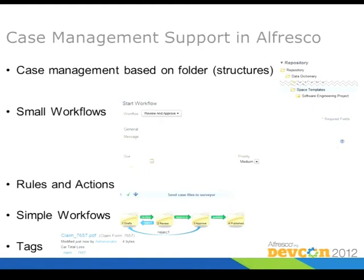We have simple workflows — we can set up folders, link them, assign simple workflow steps, and just push a button. A document goes into review, then approve, rejected goes back, and finally it ends up in published. We can have tags — we can say this is a claim document and tag it with a claim number, so we can search. This is all out of the box, nothing customized, which we can already use to do some simple case management.